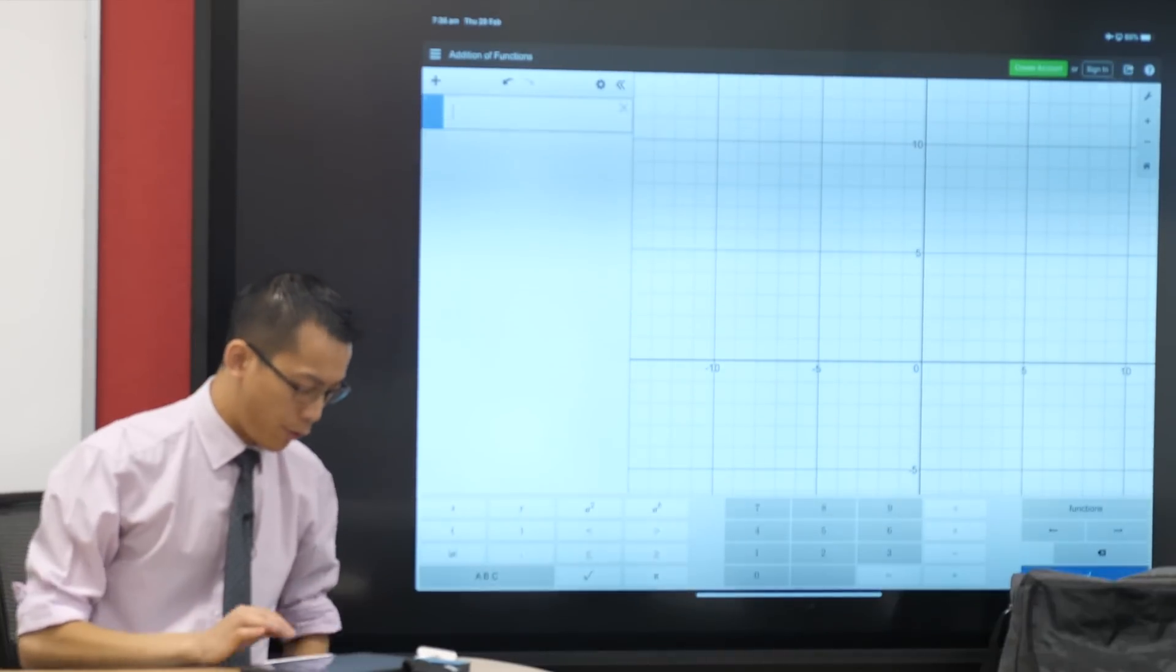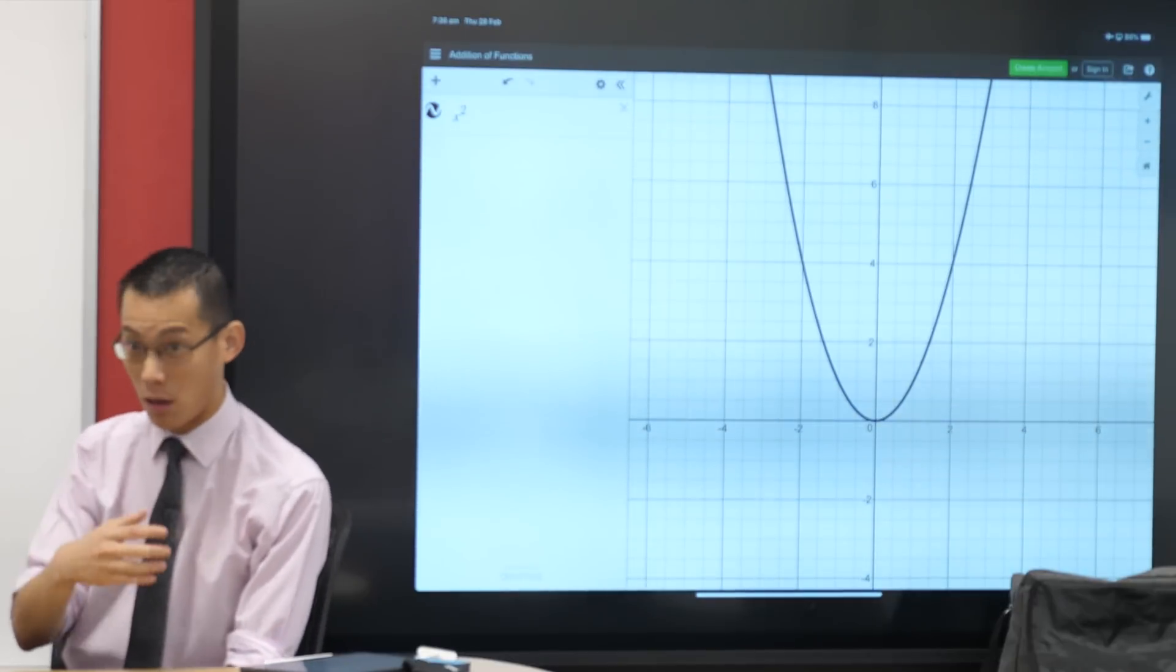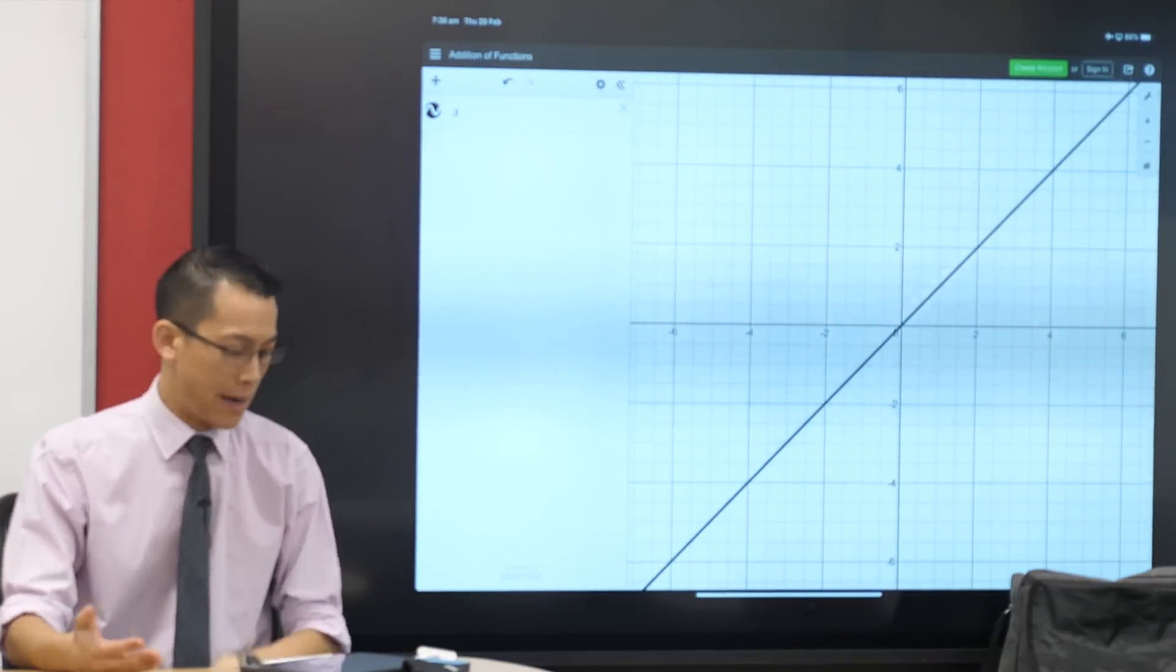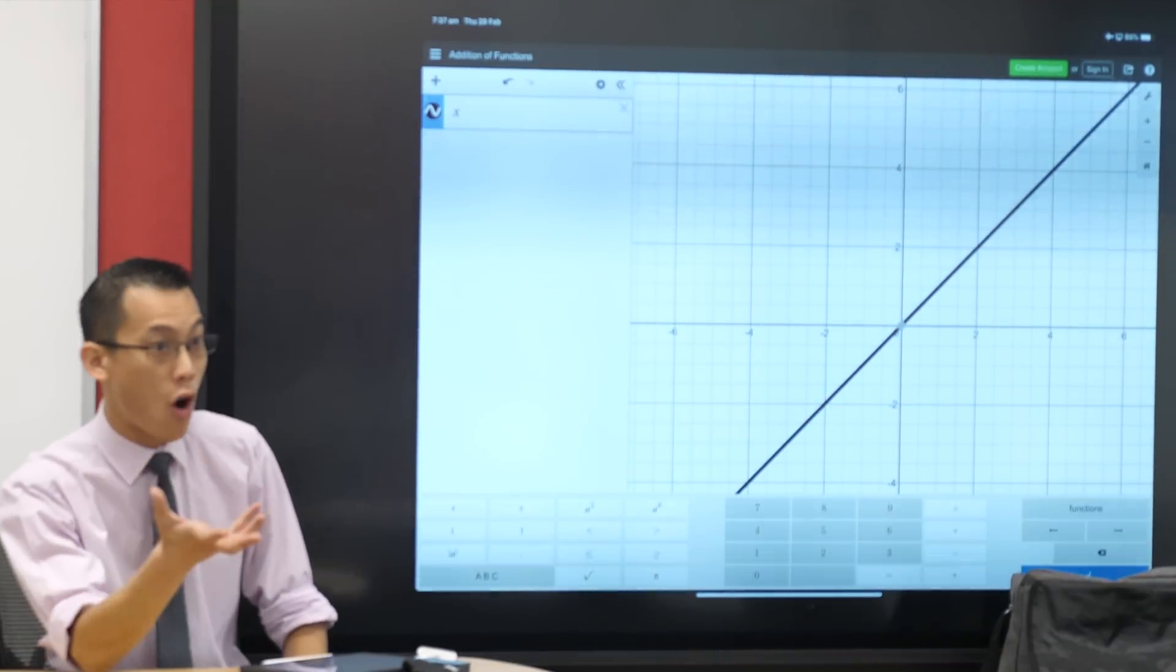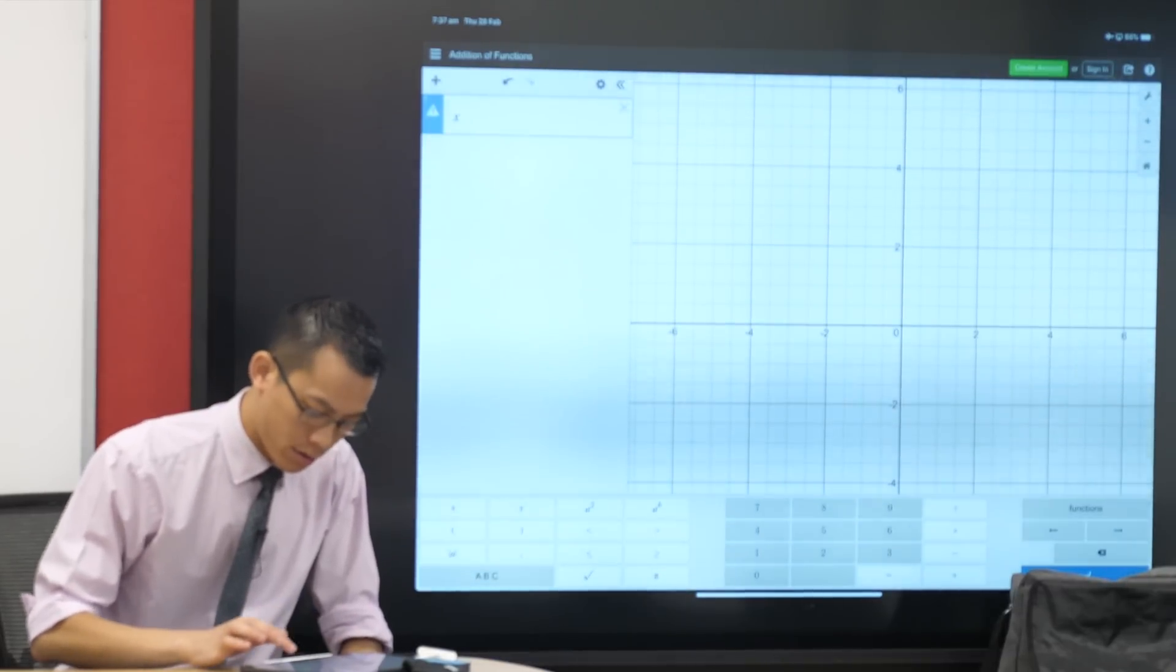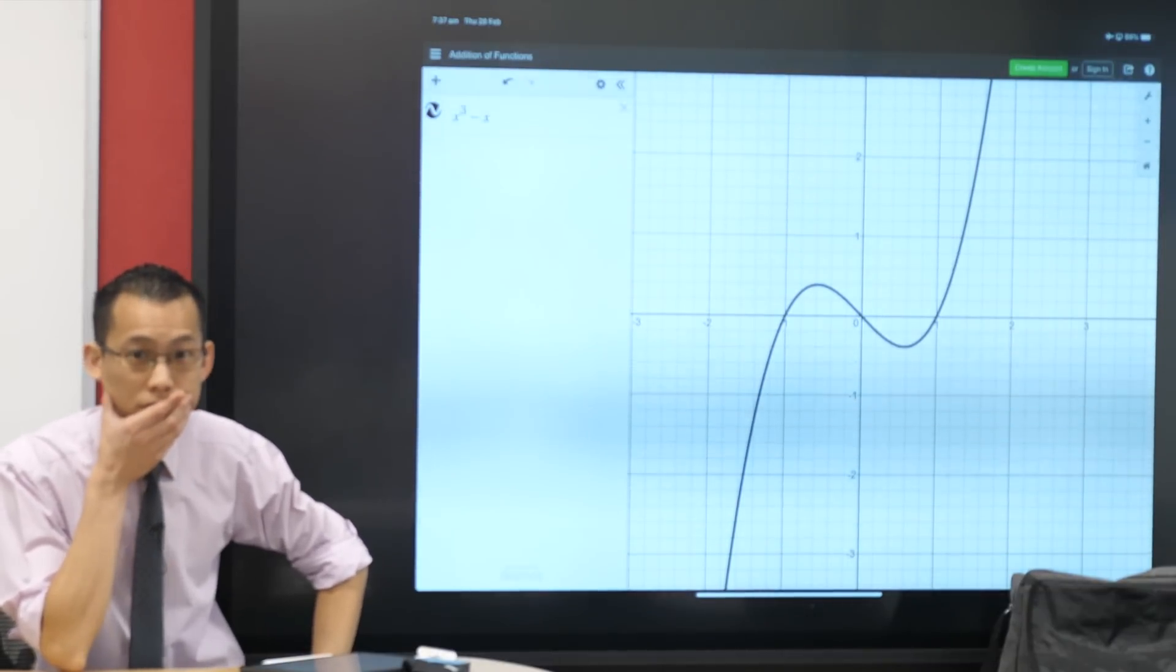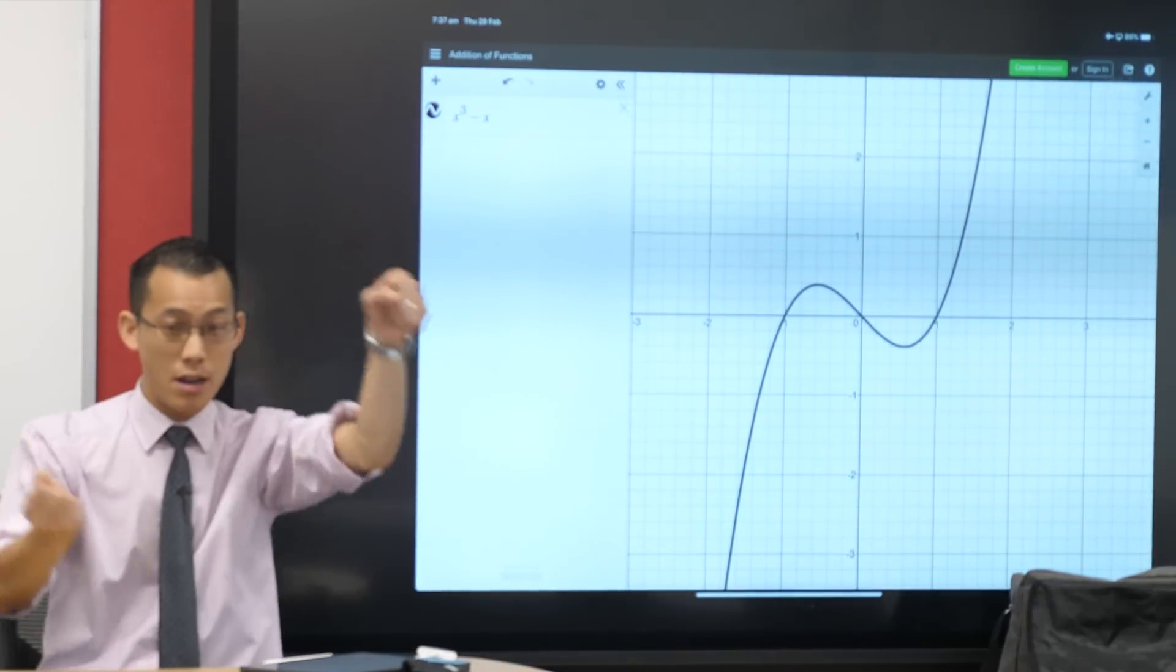One of the examples that we gave you for a function which has even symmetry is x squared. Now you've been dealing with x squared for years at this point. But you never knew to call it an even function. You never knew to call y equals x an odd function. But now we give you this new way to think of it.